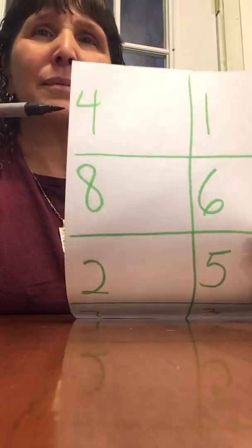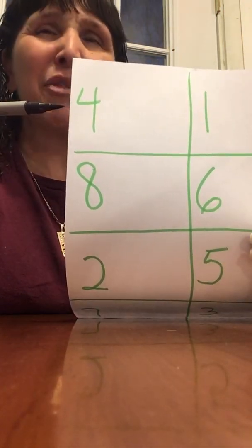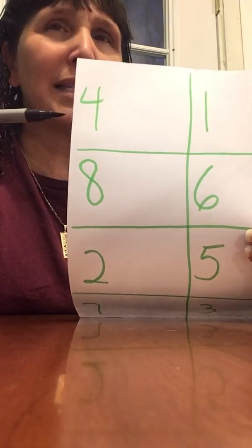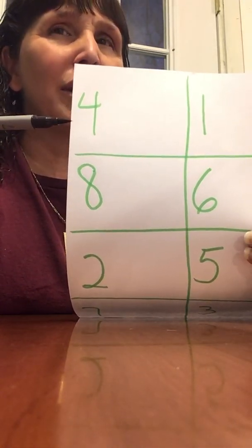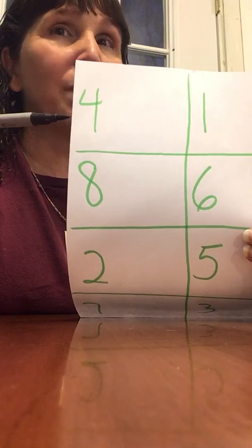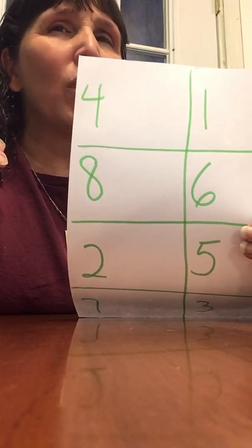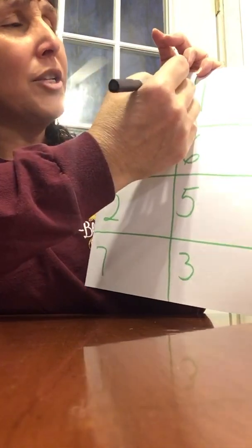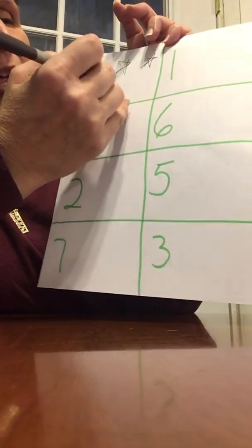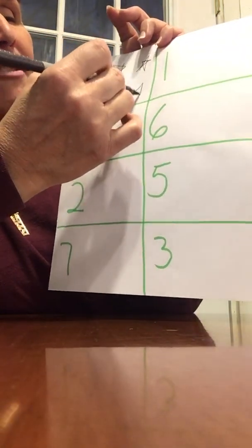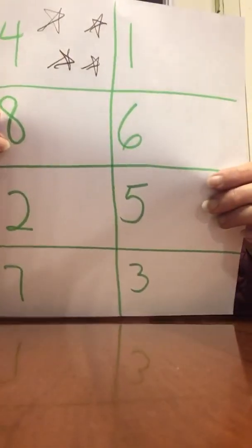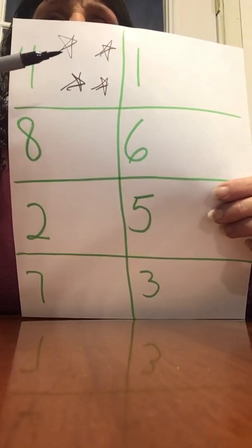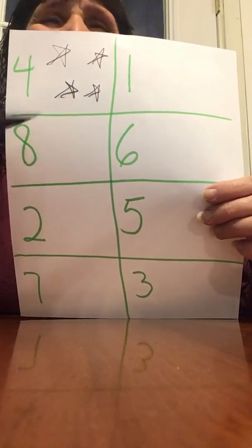What is this first number? It's the number four. So we want to draw four objects. I am definitely not an artist, so you can probably draw better than me. Let's start with four stars. One, two, three, four. Way to go. Can you count my four stars? Great job.